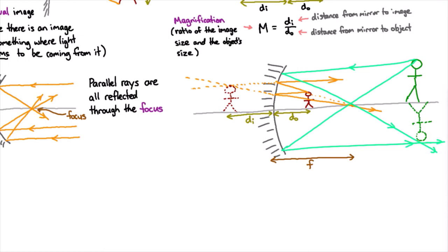If you look over at the virtual image, the light appears to be coming from that point, but actually it's coming just from the mirror.